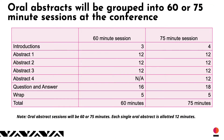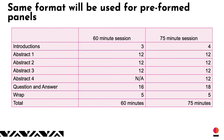Oral abstracts will be grouped into 60 or 75-minute sessions at the conference, with designated time for questions and answers, as well as a wrap-up of key lessons from the oral abstract session moderator. Pre-formed panels will have a similar format. Lead authors of pre-formed panels can choose a 3-abstract or 4-abstract panel, and are strongly encouraged to designate their own moderator.